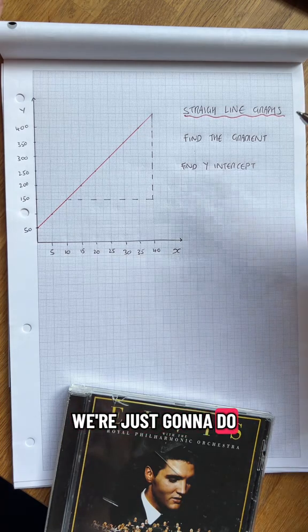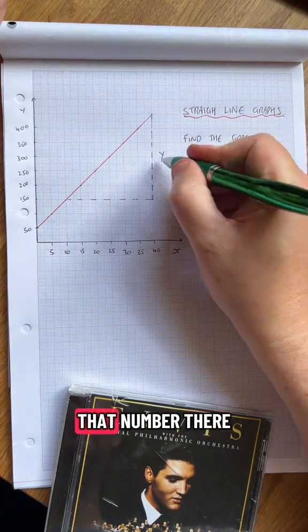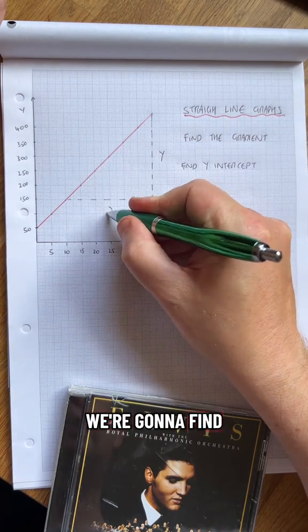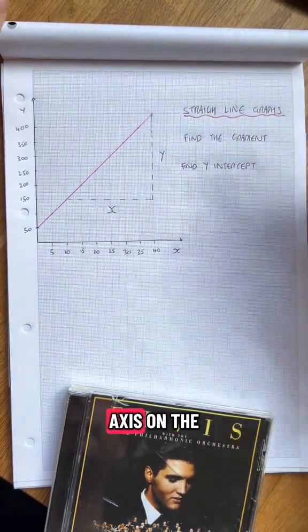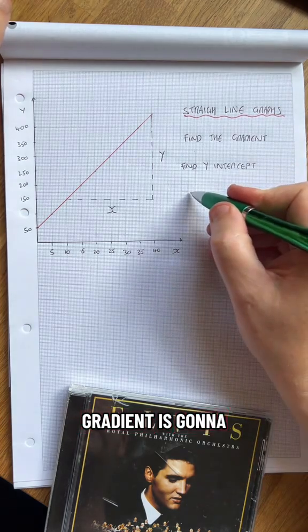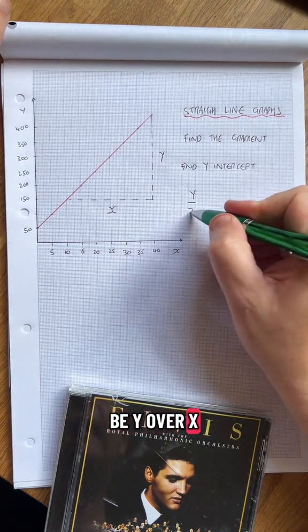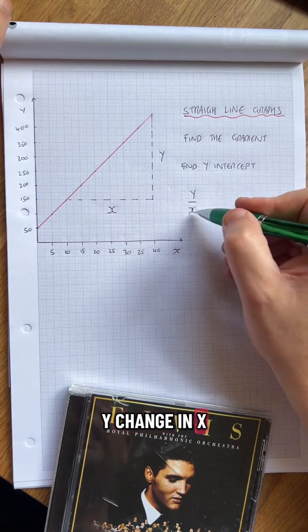So the gradient we're just going to do, we're going to find that number there, we're going to find that number there. Y-axis, x-axis. And the gradient is going to be y over x, the change in y, the change in x.